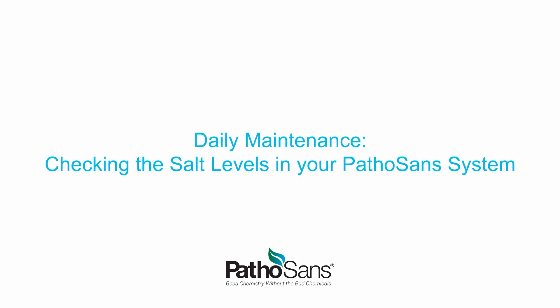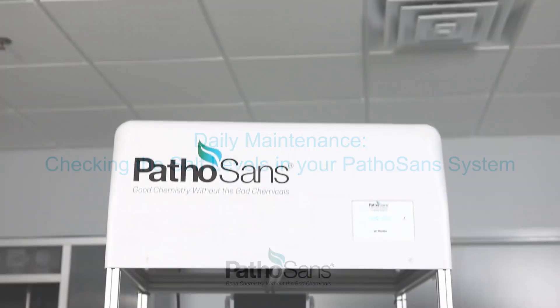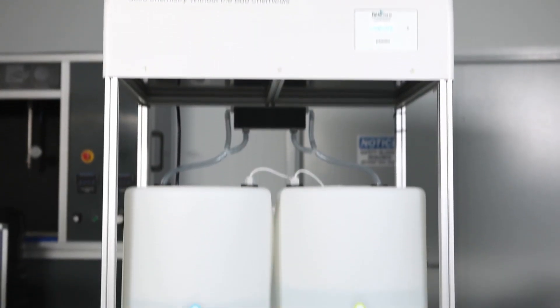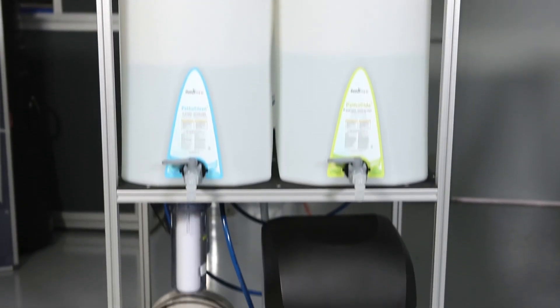The first daily maintenance operation we will demonstrate is how to check the salt level in the water softener. The water softener is located on the bottom shelf of the system tower.